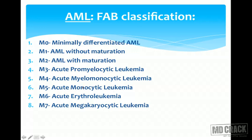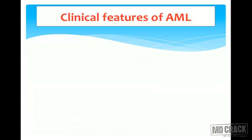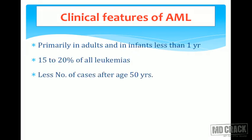M4 is acute myelomonocytic leukemia; M5 is acute monocytic leukemia — myeloblasts appearing monocytoid. M6, erythroleukemia, has equal proportions of myeloblasts and erythroblasts (50% each). M7 is the rarest, acute megakaryocytic leukemia — abnormal megakaryocytes appearing in blood circulation. AML primarily affects younger adults, infants, and accounts for 50 to 20 percent of all leukemias.